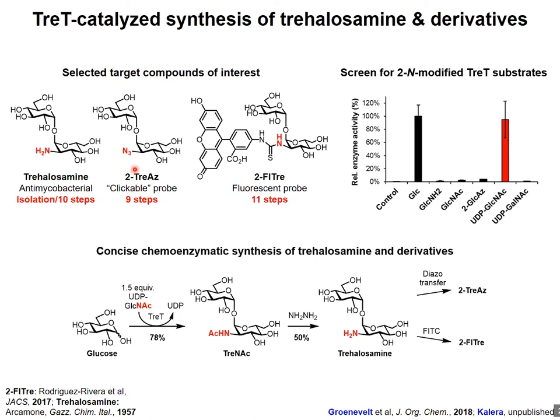We could further elaborate trehalosamine into the 2-azido and fluorescein probes by performing either diazotransfer or reaction with FITC. Instead of accessing these compounds in 9 to 11 steps, we can access them in two to three steps. This nicely shows how TRE-T catalysis and chemoenzymatic synthesis in general is a good option for making bacterial carbohydrates and their analogs. Karishma has synthesized a number of trehalosamine derivatives and is evaluating those in Mycobacterium tuberculosis.